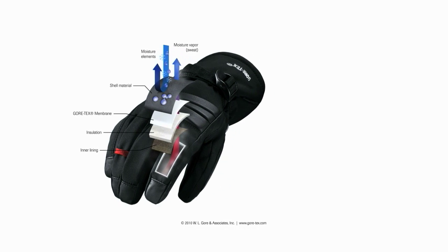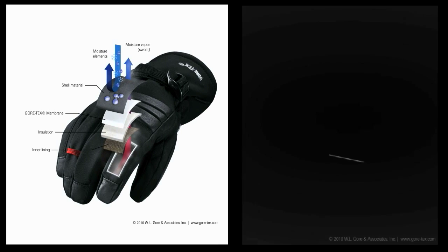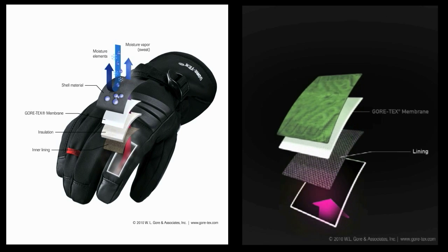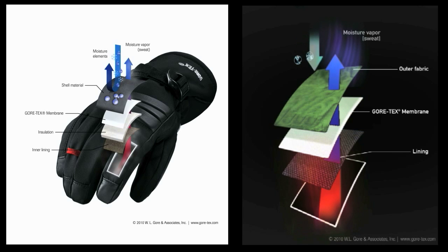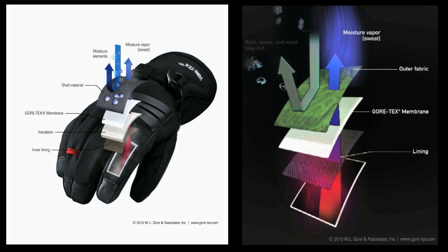The Gore-Tex membrane is laid into the glove between the outer fabric and the inner lining or insulation. You can't see it, but you'll know it's there keeping your hands completely dry and therefore very warm.